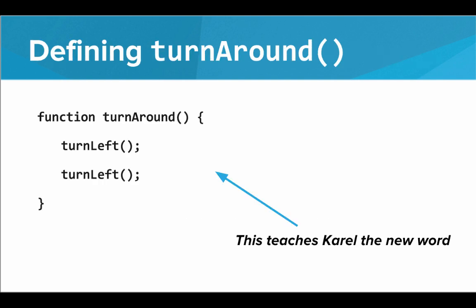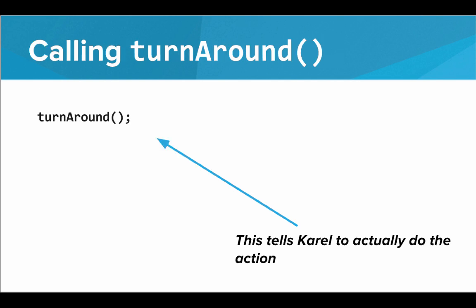So let's look at an example. Let's say I want to define a function called turnAround that has Carol face the opposite direction. To define turnAround, I need to write function turnAround, open parentheses, close parentheses, open curly brace, and inside the function body give the instructions for how Carol turns around. To turn around, you turn left twice. This is teaching Carol the new word — Carol hasn't actually done it yet, Carol just now knows how to do it. If I want Carol to actually do it, then I need to call it. I need to call the turnAround function, which tells Carol to actually carry out the action.